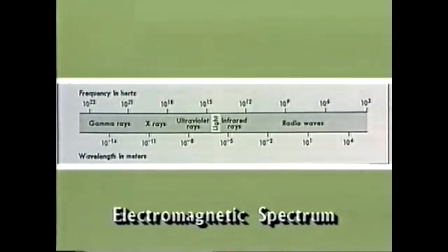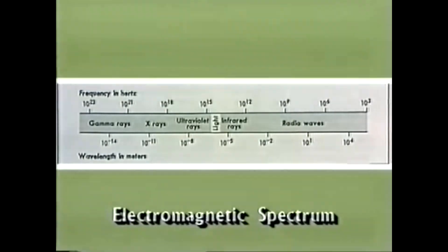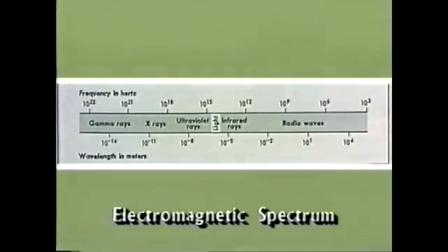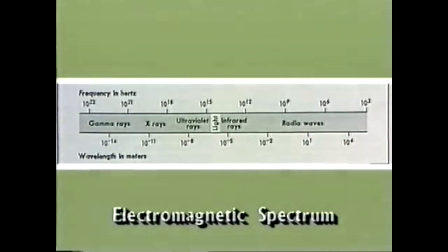If you look just to the right of the visible part of the spectrum, you'll see the word infrared rays. Just beyond the red end of the spectrum, there are infrared rays. Here's an infrared ray lamp.